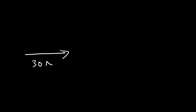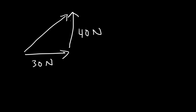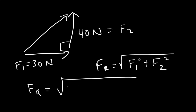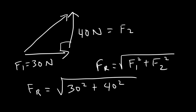Sometimes you may need to add two vectors that are not parallel or anti-parallel to each other. If we have a 30 N force directed east and a 40 N force directed north — two perpendicular vectors — you can find the resultant by finding the hypotenuse of the right triangle formed. The resultant force is the square root of F1 squared plus F2 squared, which is the square root of 30 squared plus 40 squared. Using the 3-4-5 triangle, this is the 30-40-50 triangle, so the resultant force is 50 N.